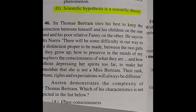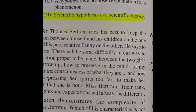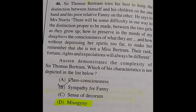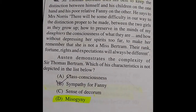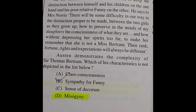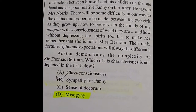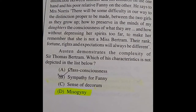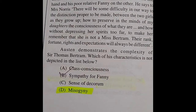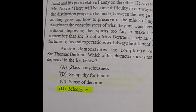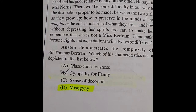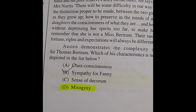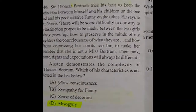Question 46: Sir Thomas Bertram tries to keep the distinction between himself and his children on one hand and his poor relative Fanny on the other. He says to Mrs. Norris: 'There will be some difficulty in our way to the distinction proper to be made between the two girls as they grow up — how to preserve in the minds of my daughters the consciousness of what they are, without depressing her spirits too far, to make her remember that she is not a Miss Bertram.' Which of his characteristics is not depicted in the list below? The right answer is option D: misogyny.